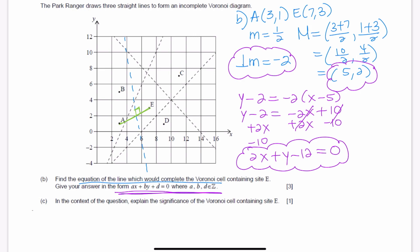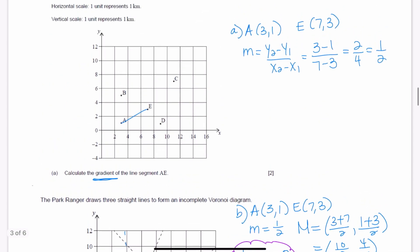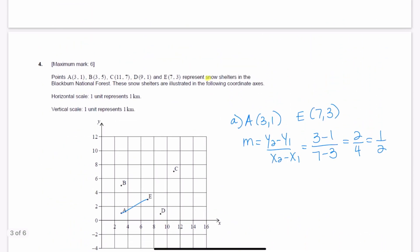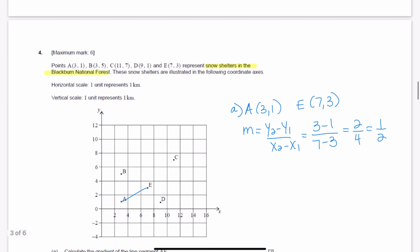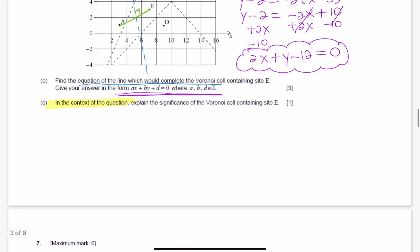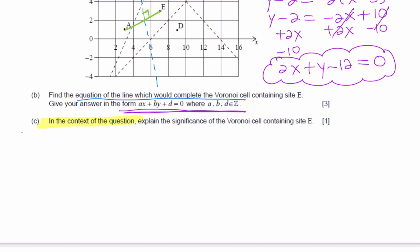For part C, it says in the context of the question, always watch out for when they ask you for the context of the question, because that means that you have to go back and remember what this question is about. In this case, we're talking about snow shelters in the Blackburn National Forest. So that is the key words here, snow shelters, when you want to answer this question, because it is in the context of the question. It says explain the significance of the Voronoi cell containing site E. Basically, what this means is that every point in the cell is closer to E than any other snow shelter. And to get the full marks, you have to make sure that you write this in context. And this is regarding snow shelters.